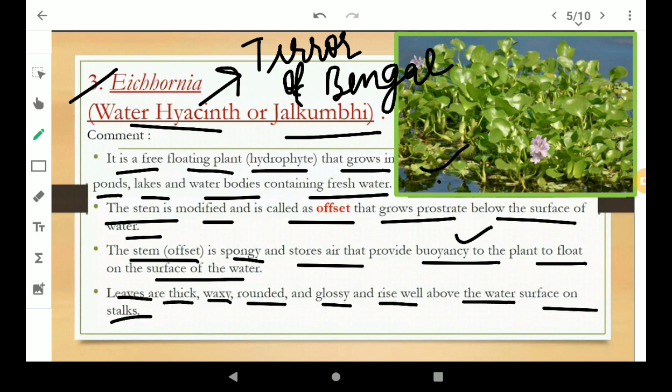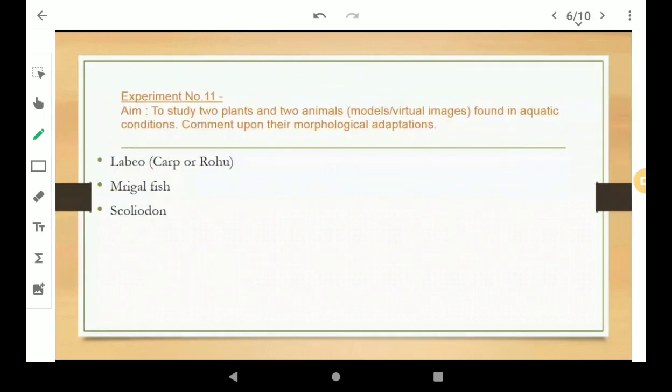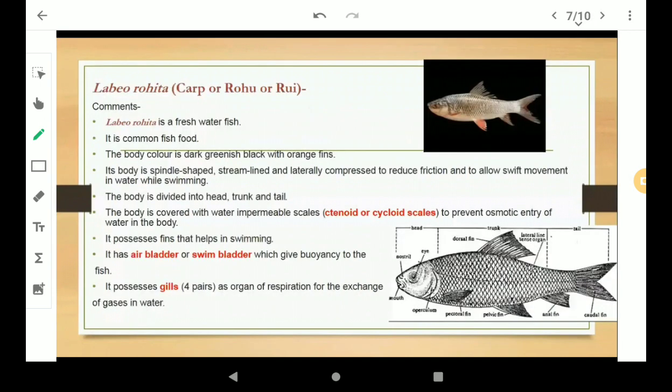So this was all about Eichhornia. Now we will be talking about two animals: Labeo and Scolidon. Labeo rohita is also known as carp because it belongs to carp family. It is also known as rohu, and Bengalis love to call this fish as ruhi. Labeo rohita is a freshwater fish.